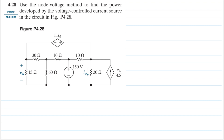Hello, my name is RD and we are going to solve problem 4.28 from the Nielsen and Riddle book. The question is: use the node voltage method to find the power developed by the voltage-controlled current source. So we are asked about the power of this voltage-controlled current source right here.